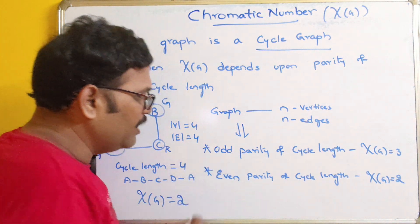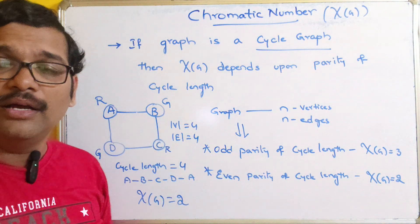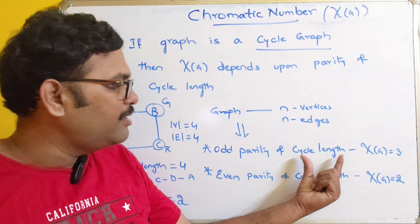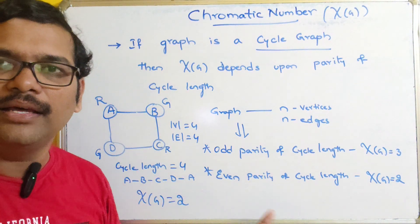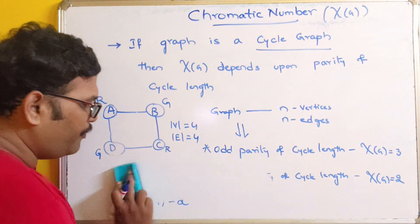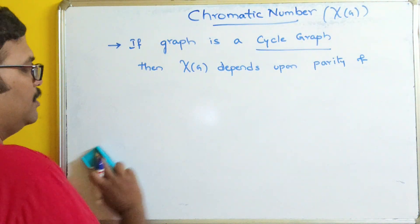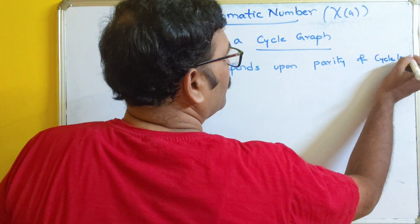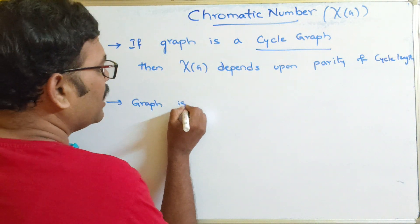To summarize: for a cycle graph — where vertices and edges are equal — the parity of the cycle length determines the minimum number of colors. We can decide the chromatic number based on parity.